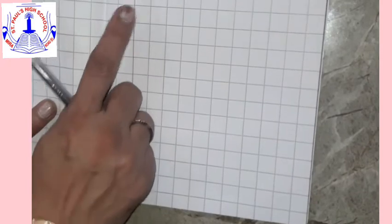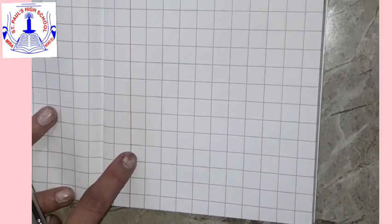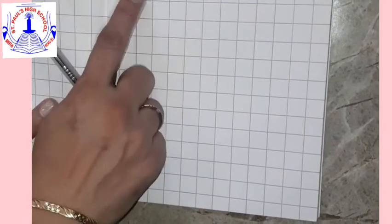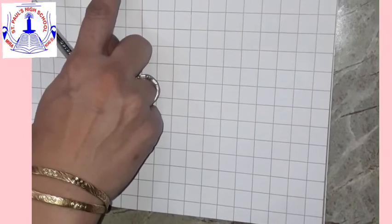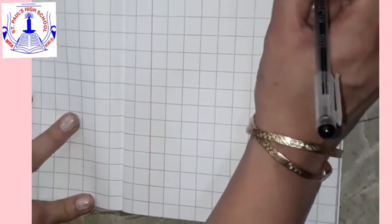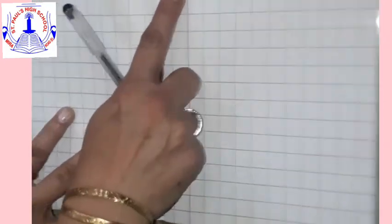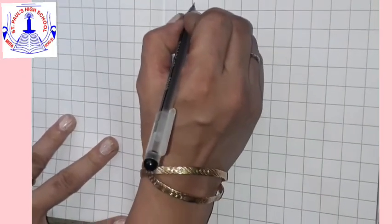So children, we have revised the numbers orally from 1 to 40. Now, we are going to write numbers 31 to 40. First, write the date on the right hand side, then write C.W. After the red line, start writing from here. Come on.